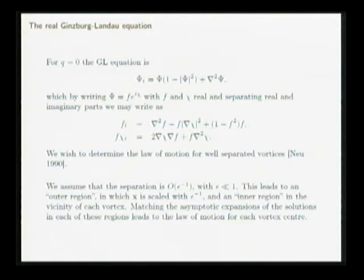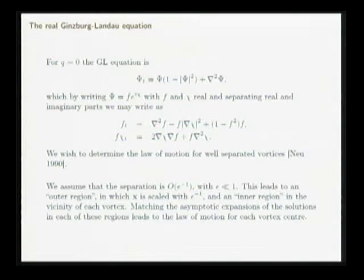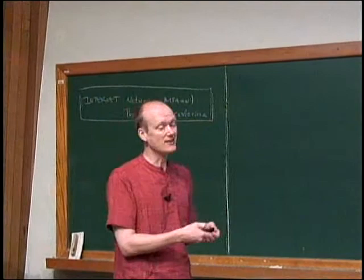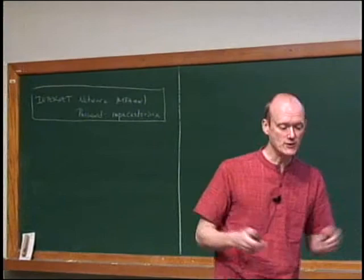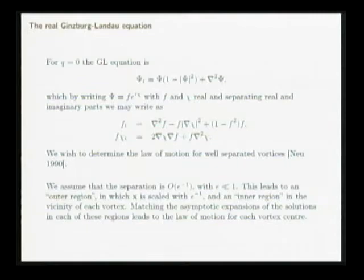The law of motion for well-separated vortices in this system goes back to John New in 1990, and this analysis has become the paradigm for motion of singularities. The way it works is you assume the vortices are well-separated — separation of order one over epsilon where epsilon is small. Then the solution ends up being divided into two regions: an outer region where you scale distance on the vortex separation and see all the vortices separated, and an inner region near each vortex where you scale back to the original length scale and see the details of the vortex core.